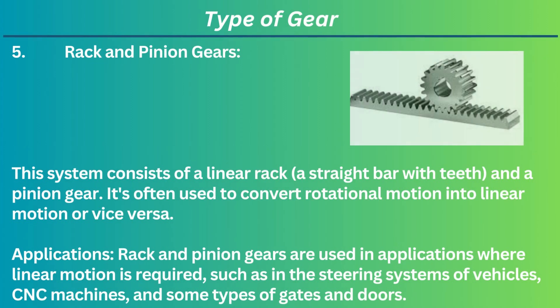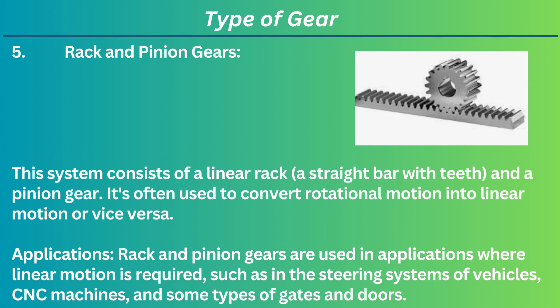5. Rack and pinion gears. This system consists of a linear rack (a straight bar with teeth) and a pinion gear. It's often used to convert rotational motion into linear motion or vice versa. Applications: Rack and pinion gears are used in applications where linear motion is required, such as in the steering systems of vehicles, CNC machines, and some types of gates and doors.